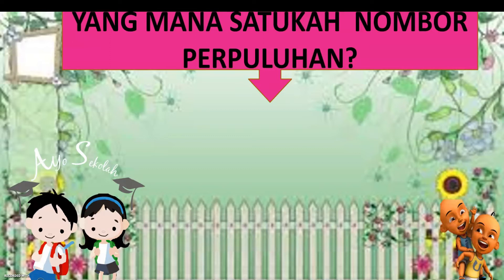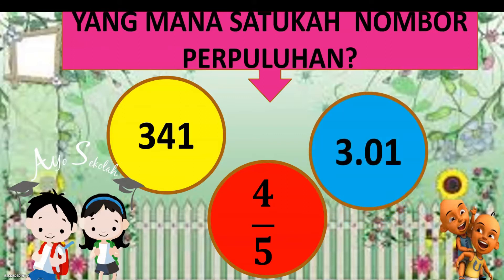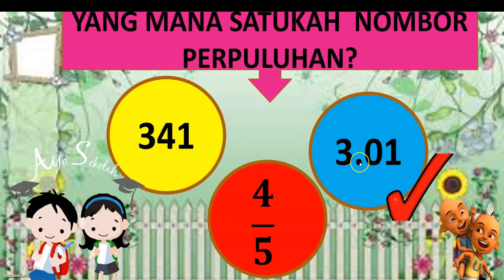Yang mana satukah nombor perpuluhan? Cuba adik-adik teka. Adakah yang ini, atau yang ini, atau yang berwarna biru? Ada tiga pilihan: kuning, merah, biru. Yang berwarna biru inilah nombor perpuluhan. Kenapa? Seperti yang Cikgu Lizawati katakan tadi, nombor perpuluhan ada titik di antara nombor itu. Inilah yang dikatakan nombor perpuluhan. Yang kuning adalah nombor bulat, dan yang merah ialah pecahan.